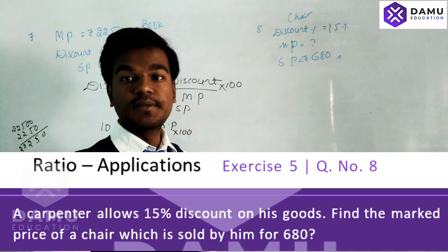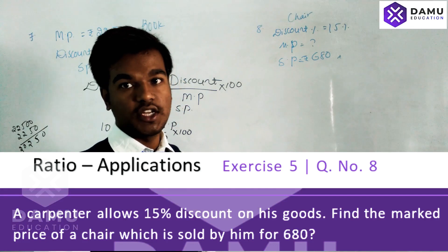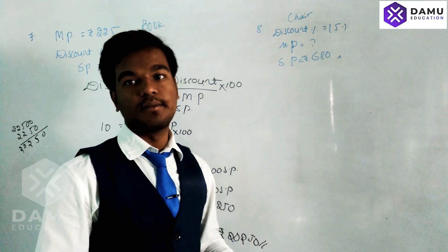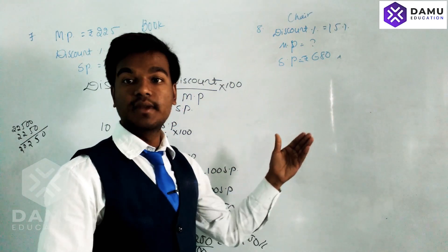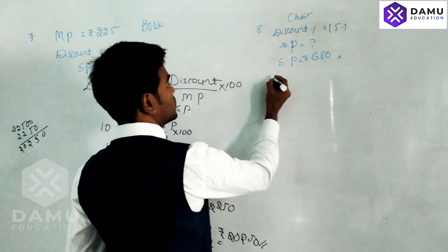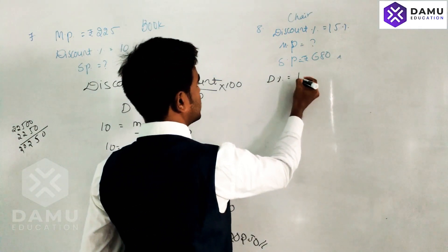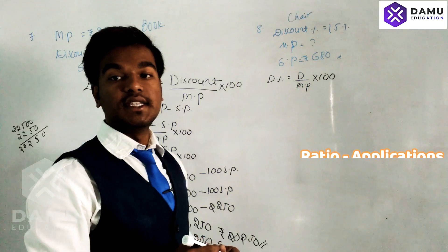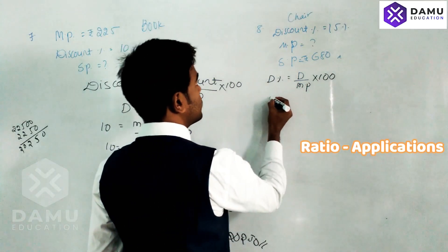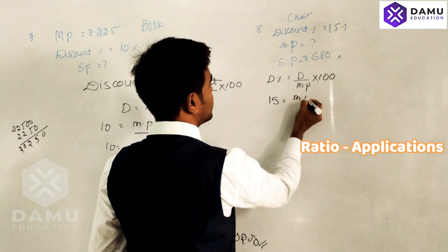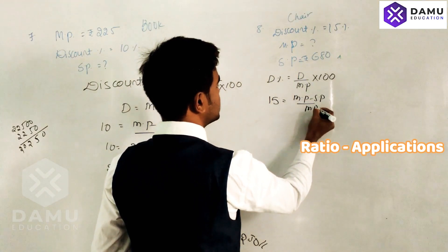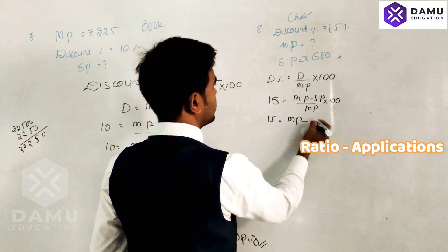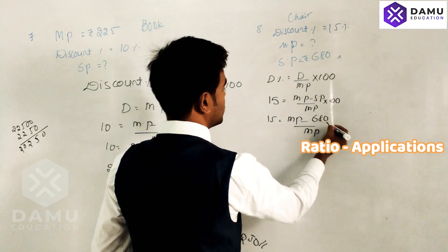The chair's discount percent is 15% and selling price is 680 rupees. Obviously, selling price will be less than market price. Using the discount percentage formula: discount percentage equals (market price minus selling price) divided by market price, multiplied by 100. So 15 equals (MP minus 680) divided by MP, multiplied by 100.